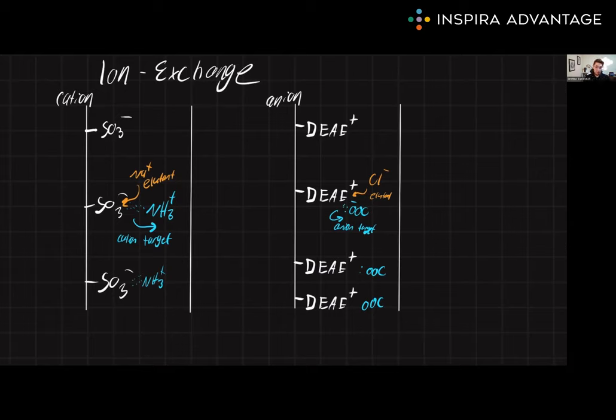Now there are two types of ion exchange chromatography you need to know for the MCAT. We've got cation and anion exchange. They're named for the type of ion that they are binding first.